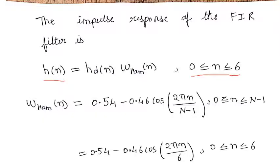The Hamming window function is defined as 0.54 minus 0.46 cos of 2 pi N divided by N minus 1.